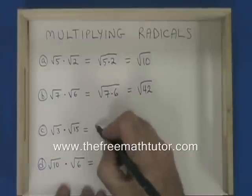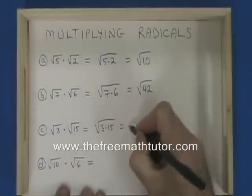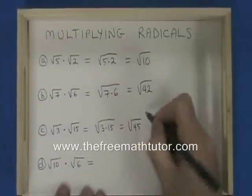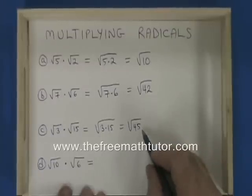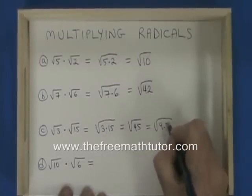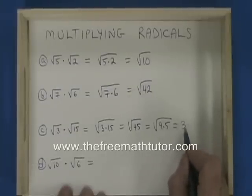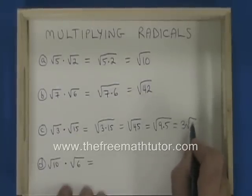Root 3 times root 15 is the square root of 3 times 15, which is the square root of 45. And 45 does have a factor which is a square, which is 9. And so we break it into 9 times 5. The square root of 9, 3, comes outside of the radical, and the 5 is trapped inside.